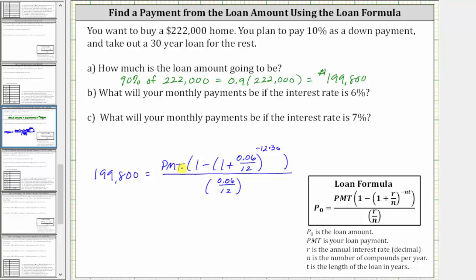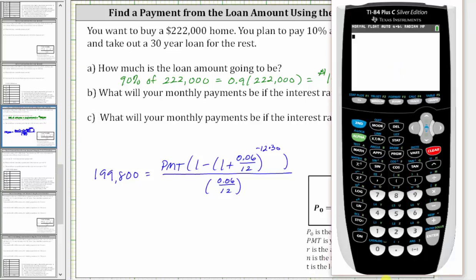And now to solve for PMT, we will evaluate this quotient here, which will give us PMT times some value, and then we can solve for PMT by dividing both sides by that value. So going to the calculator, we will evaluate this quotient here on the right side of the equation.